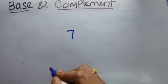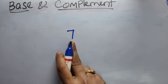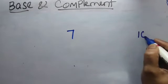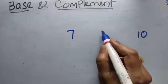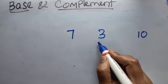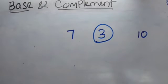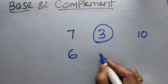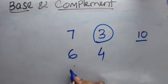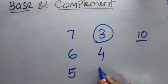Like if I say what is the complement of 7? What is the nearby base? It is 10. What is the difference from the base? 3. So we can say the complement of 7 is 3. The complement of 6 is 4 because the base is 10. The complement of 5 is 5.